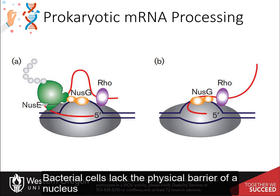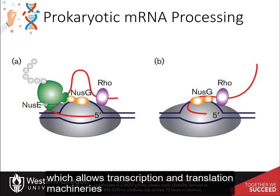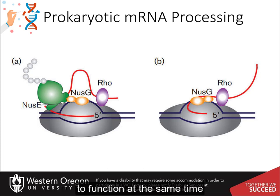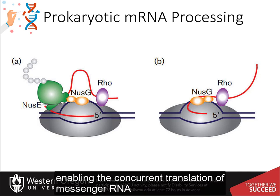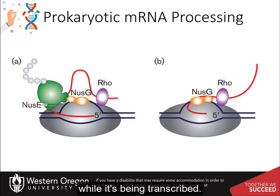Bacterial cells lack the physical barrier of a nucleus, which allows transcription and translation machineries to function at the same time, enabling the concurrent translation of messenger RNA while it's being transcribed.